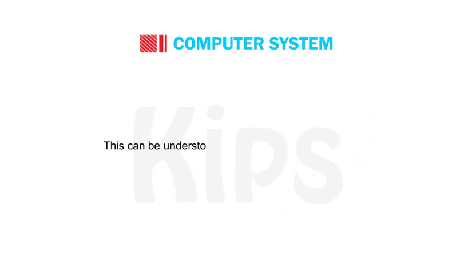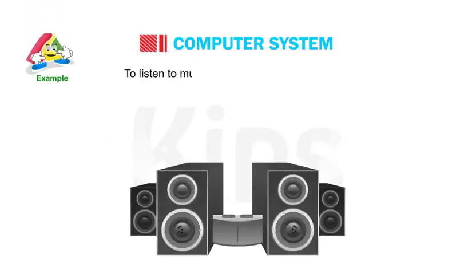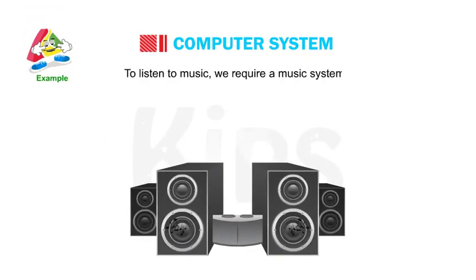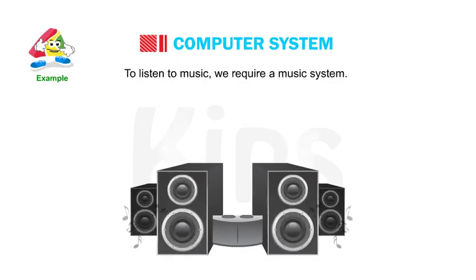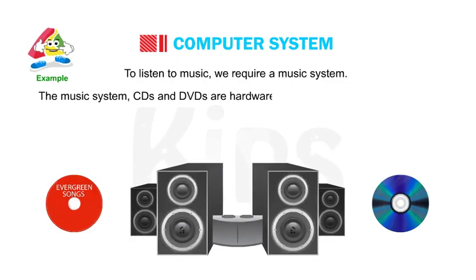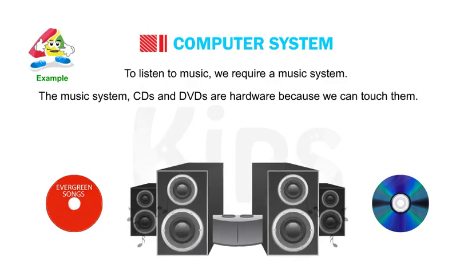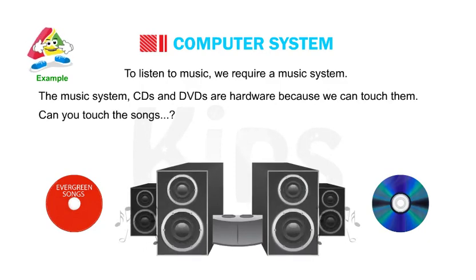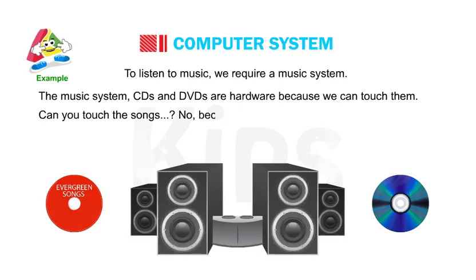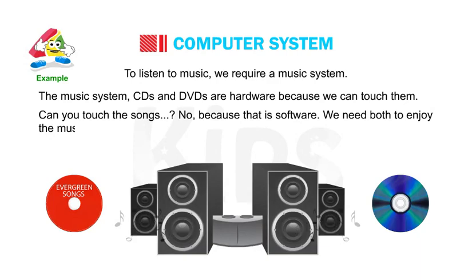This can be understood with the help of a given example. To listen to music, we require a music system. The music system, CDs and DVDs are hardware because we can touch them. Can you touch the songs? No, because that is software. We need both to enjoy the music.